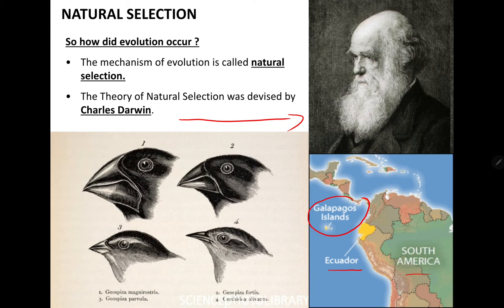Darwin was greatly influenced by the variety of life he observed, in particular in the Galapagos Islands. Darwin and another scientist called Alfred Wallace independently came to the same conclusion. Darwin jointly presented their theories in a scientific paper entitled 'On the Origin of Species by Means of Natural Selection' to the Linnaean Society in London in 1859. So this theory has been around for some time.